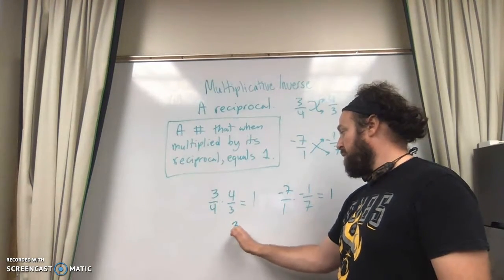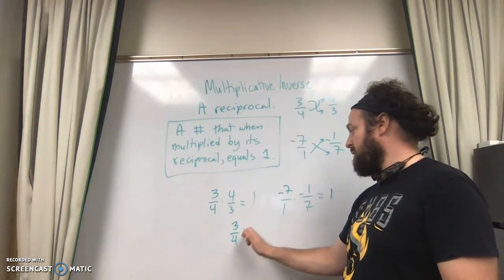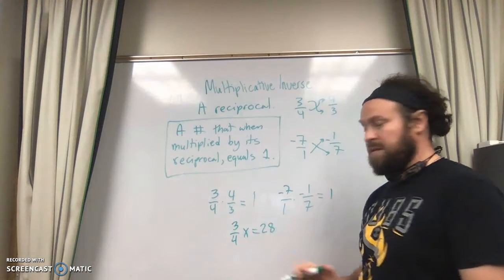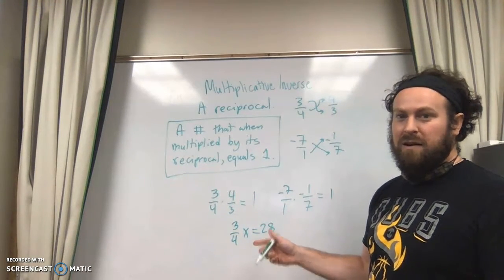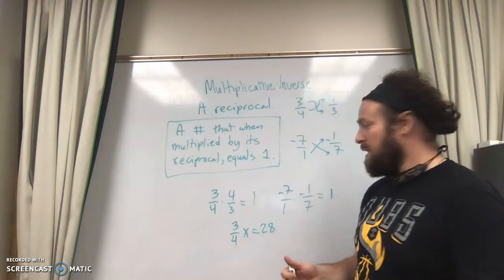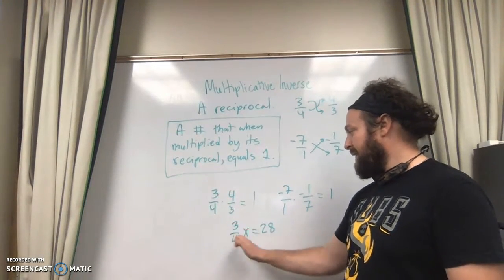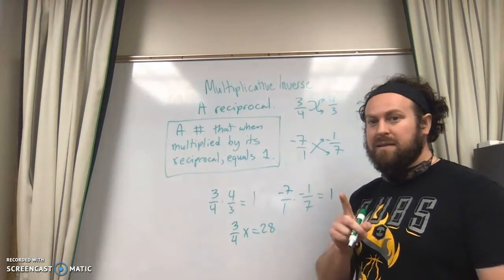Like 3 fourths x equals 28. Again, hard to guess at what the answer is here. Hard to look at this and say, oh, divide by 3 fourths. A lot easier to say I can get this to be just 1x.